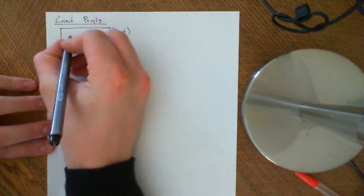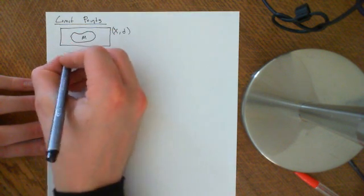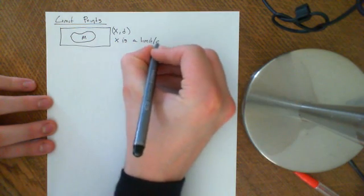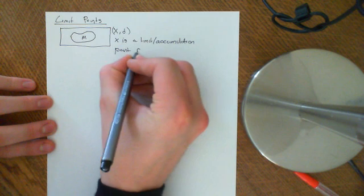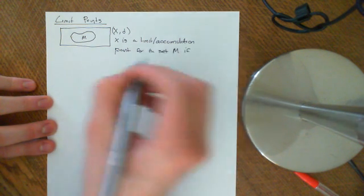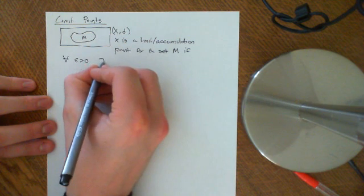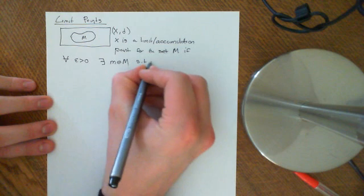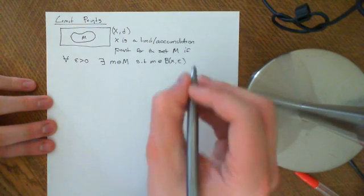The concept of a limit point is: if you have a set, let's say big M, then little x is a limit point — a limit slash accumulation point — for the set big M, if for all epsilon greater than zero, there exists a little m which is an element of big M, such that little m is an element of the ball around the point x of size epsilon.